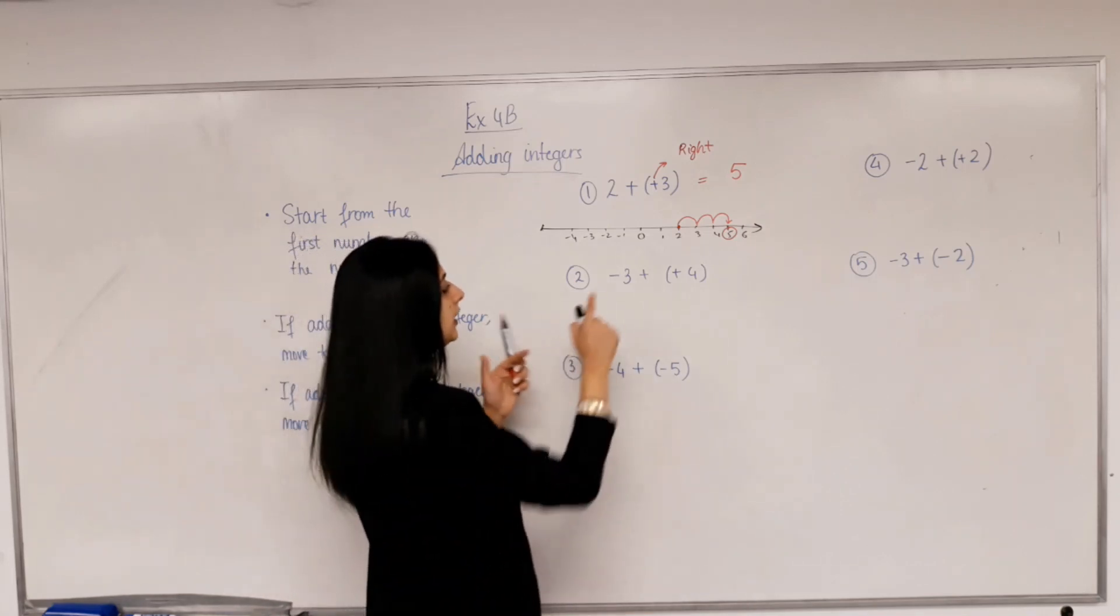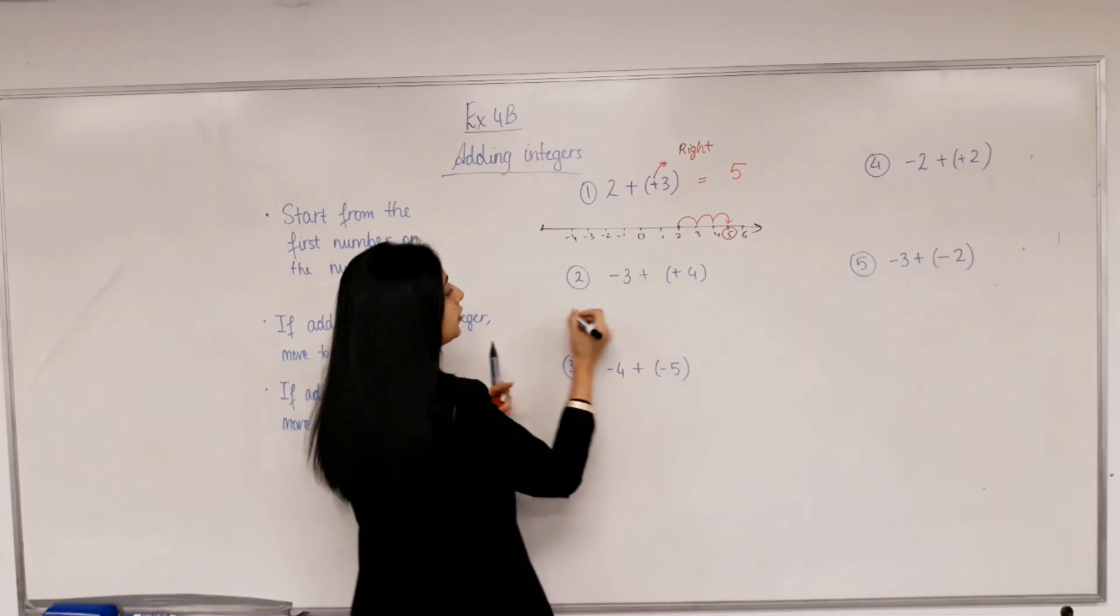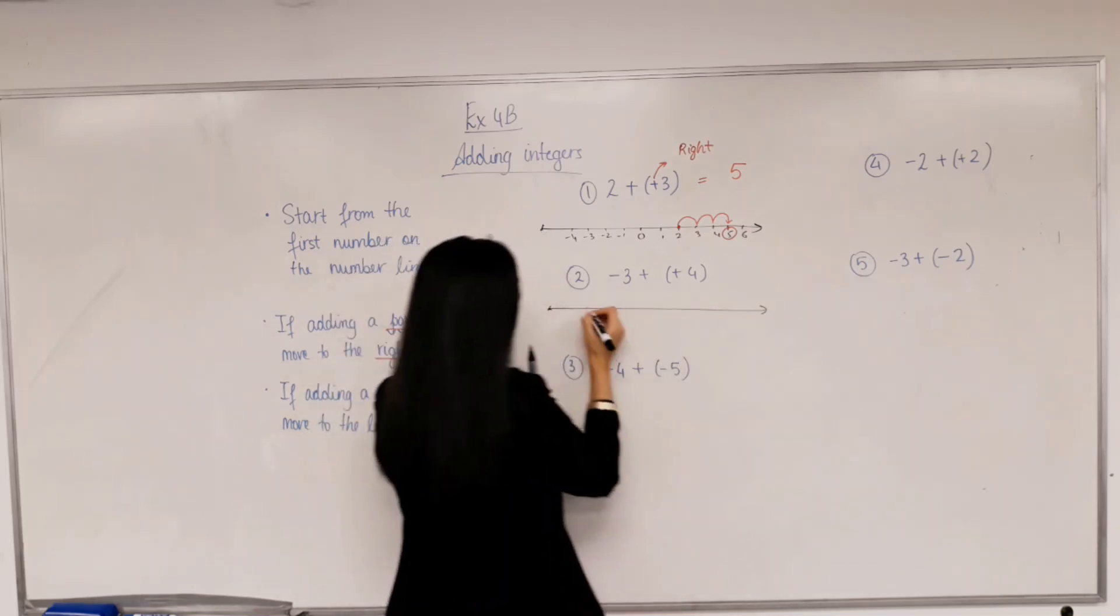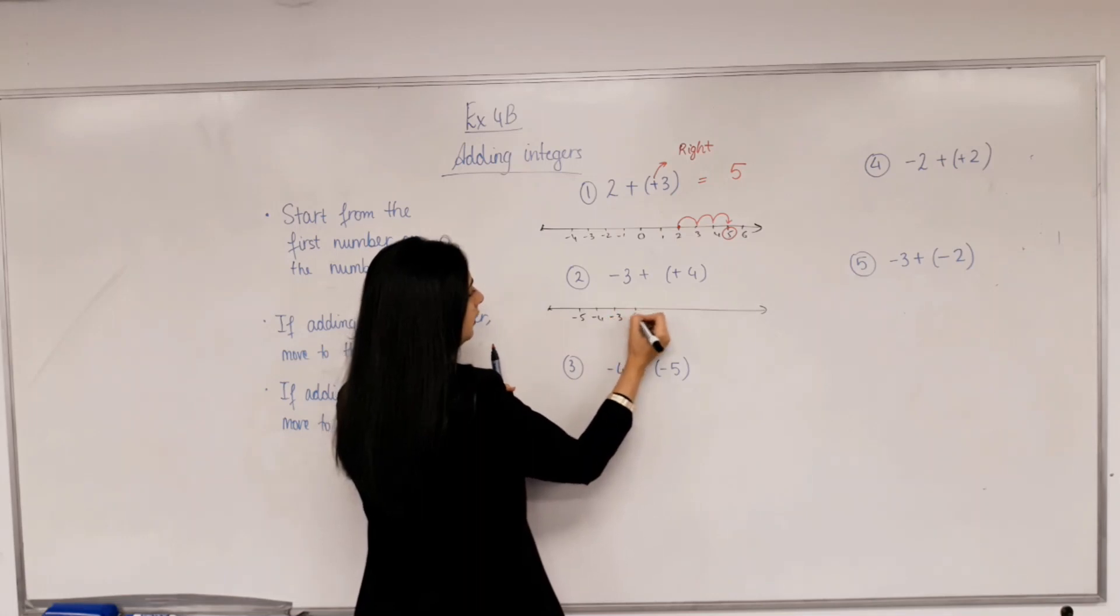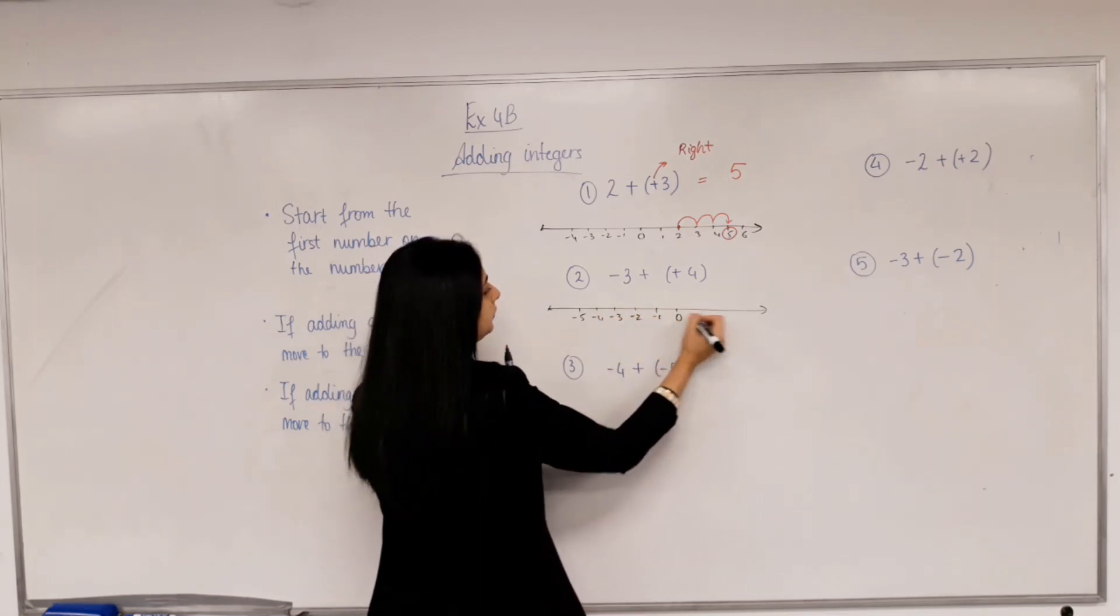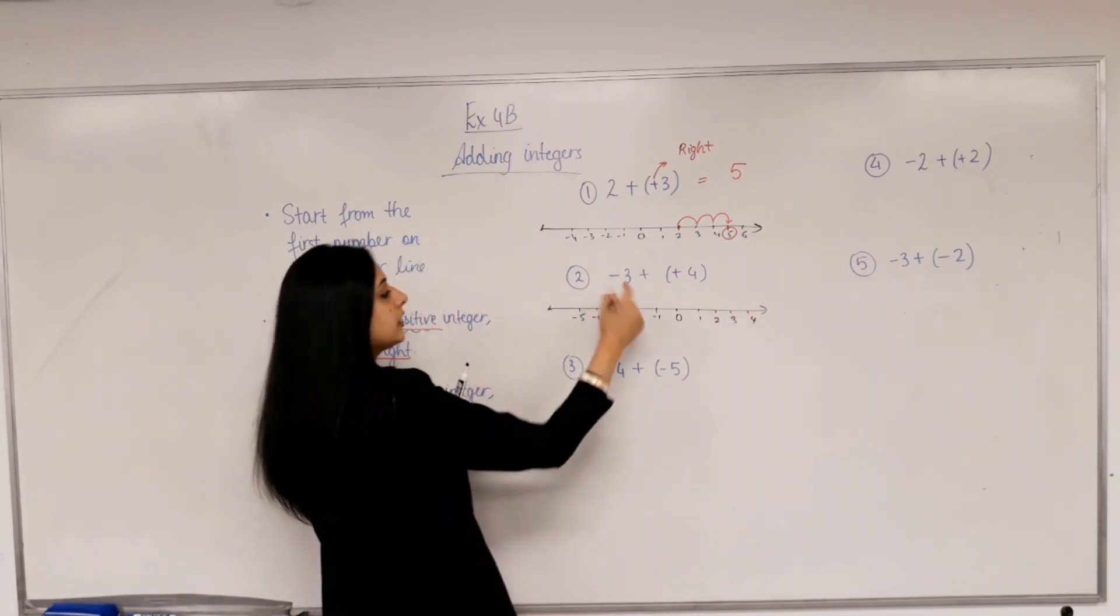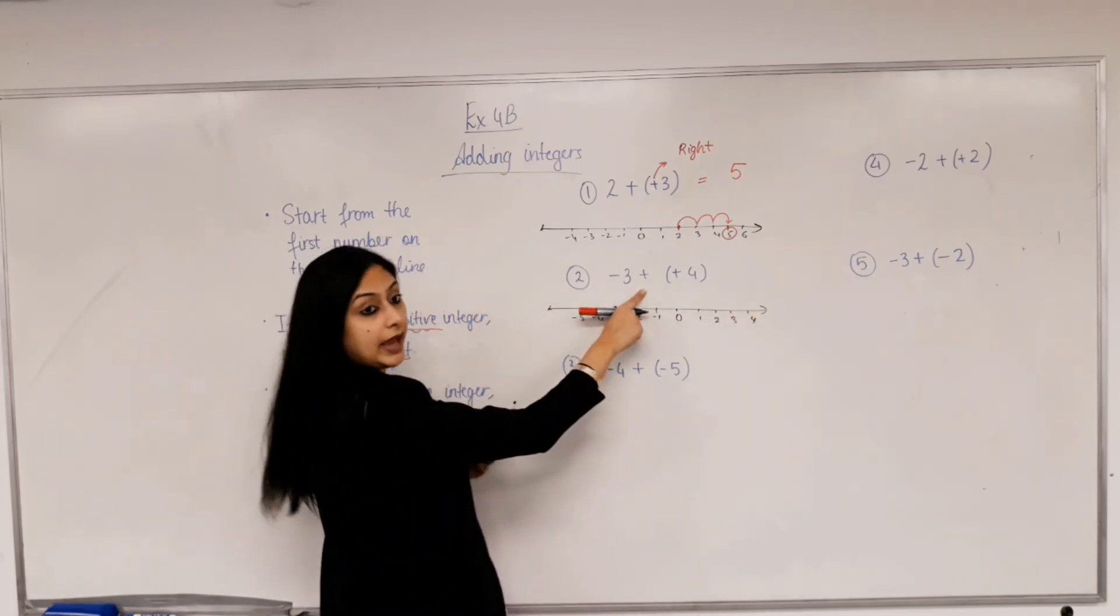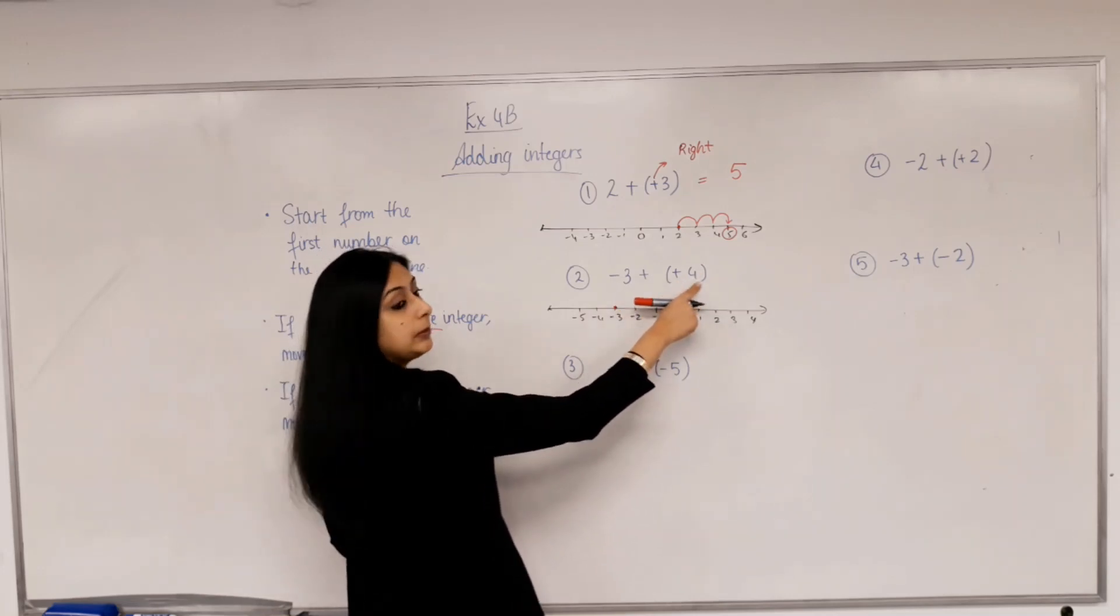Start at negative 3 and you're adding a positive integer. So you add 4. So, again, draw a number line. Again, let's assume they're equally spaced. Okay. Starting at negative 3. Because we're adding a positive integer. We move to the right. How many places?